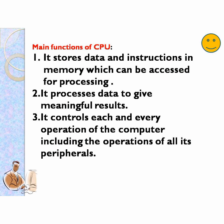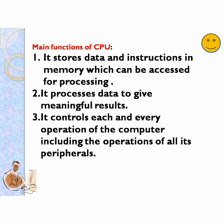We'll discuss memory unit after the functions of CPU. The main functions of CPU: first, it stores data and instructions in memory which can be accessed for processing. Second, it processes data to give meaningful results. Third, it controls each and every operation of the computer including the operations of all its peripherals. So these are the functions of the central processing unit, that is CPU.